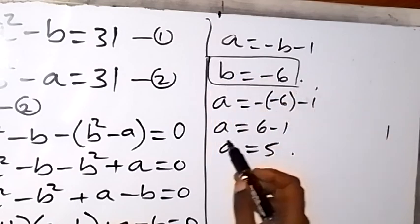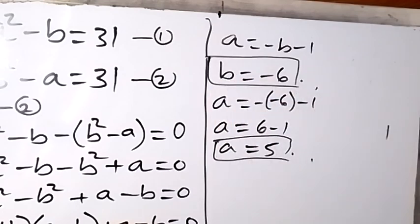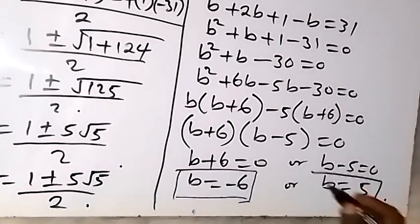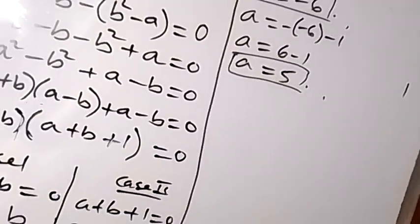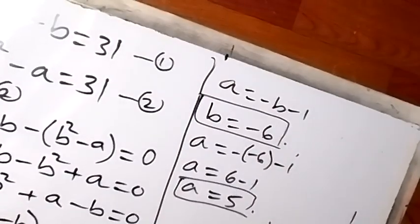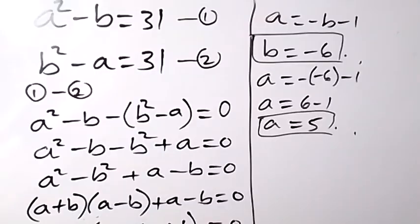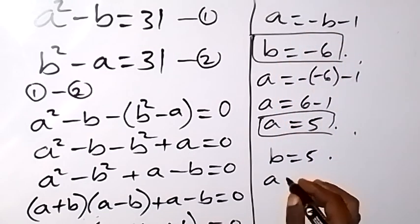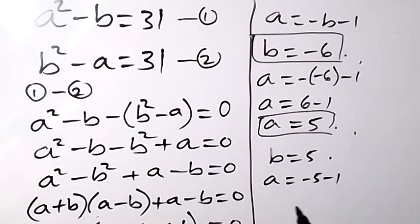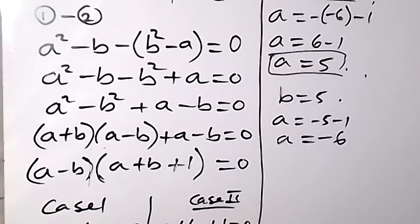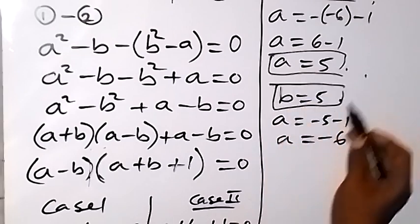When b equals 5, we use the same relation: a equals −5 − 1, so a equals −6. So when b equals 5, a equals −6.